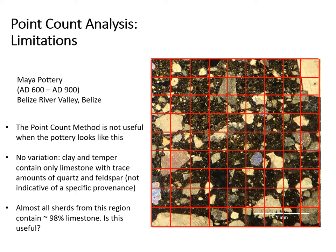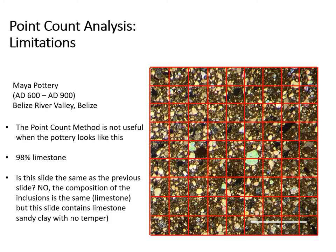The point count method doesn't work as well in regions with minimal geologic variability. Although Belize has major geologic differences, within each region the bedrock is very similar, so point counting the inclusions in the pottery doesn't provide as much insight. For example, this thin section shows limestone temper in a clay that naturally contains limestone. If you were to point count this sherd, over 98% of the inclusions would be limestone. This slide is from a sherd excavated from the same site, and both contain over 98% limestone — but does this mean they were produced in the same way or in the same place?